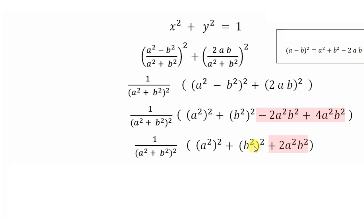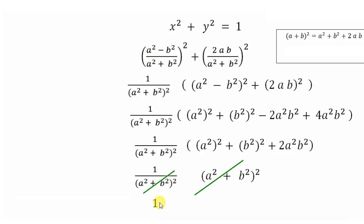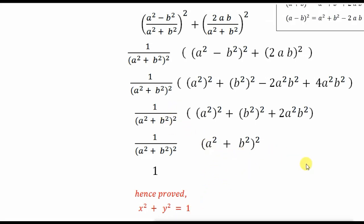We recognize a⁴ + 2a²b² + b⁴ as (a² + b²)². So x² + y² = (a² + b²)²/(a² + b²)² = 1. Both terms cancel, and we get 1. Hence proved: x² + y² = 1. If you have any questions, you can ask me in the comments — thank you!